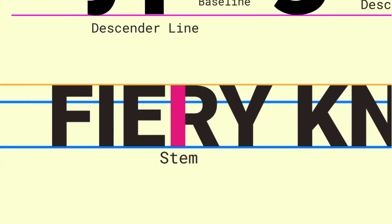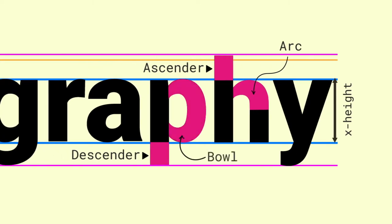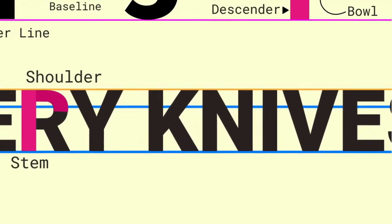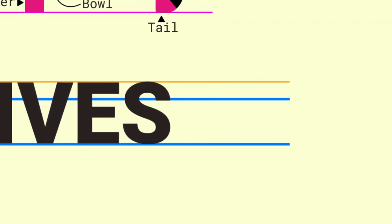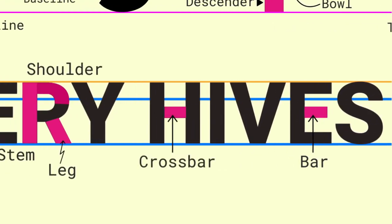An arcing stroke is called a shoulder if it's found on the top, or just an arc if it's found elsewhere. A closed curved stroke is called a ball, and a trailing out stroke is called a tail. A diagonal stroke that rests mostly on the baseline is called a leg, while a short horizontal stroke in the middle of a character is called a bar. Bars that connect two other strokes are called crossbars.